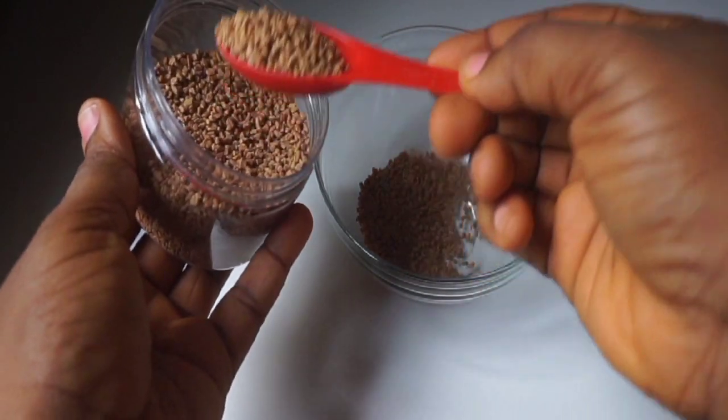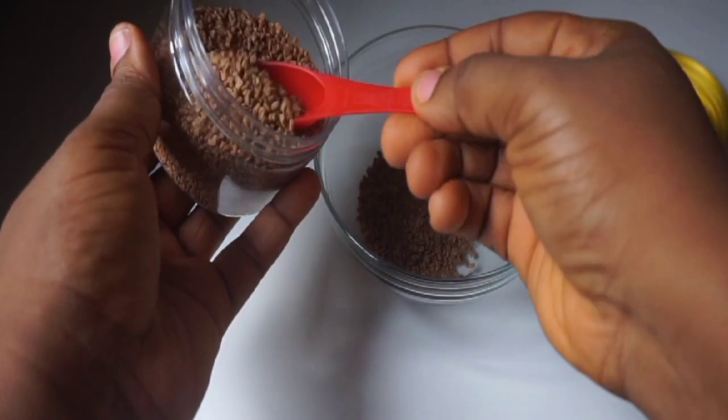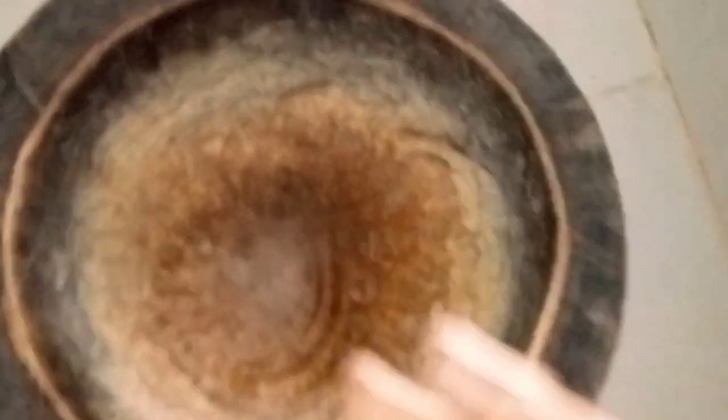My blender was faulty, so I had to use my mortar. In here, I'm going to pour in my fenugreek seeds and later pound it.